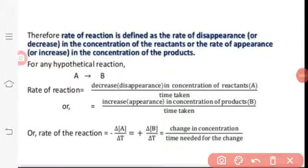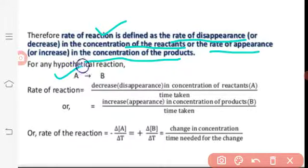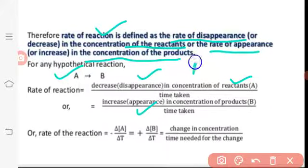Now, how will you calculate the rate of a reaction in terms of appearance or disappearance? The rate of reaction is defined as the rate of disappearance — the decrease in concentration of reactant — or the rate of appearance — the increase in concentration of product — divided by time taken. For a reaction A → B, the rate is the decrease in concentration of A or the increase in concentration of B divided by time taken.